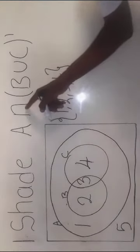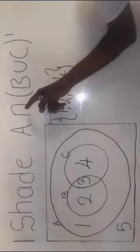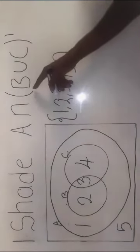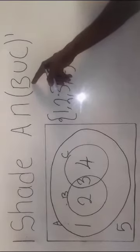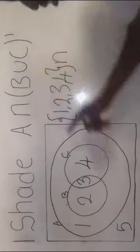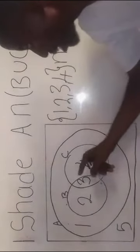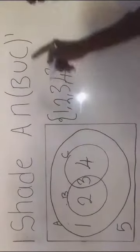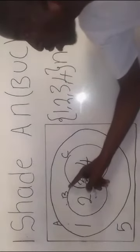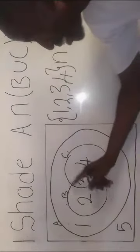Now we have said A intersect. Intersect simply means common. Now we have said open bracket, B union C. B union C simply means everything which belongs to set B and set C. Now we have said complement, meaning don't write anything which belongs to set B and set C.